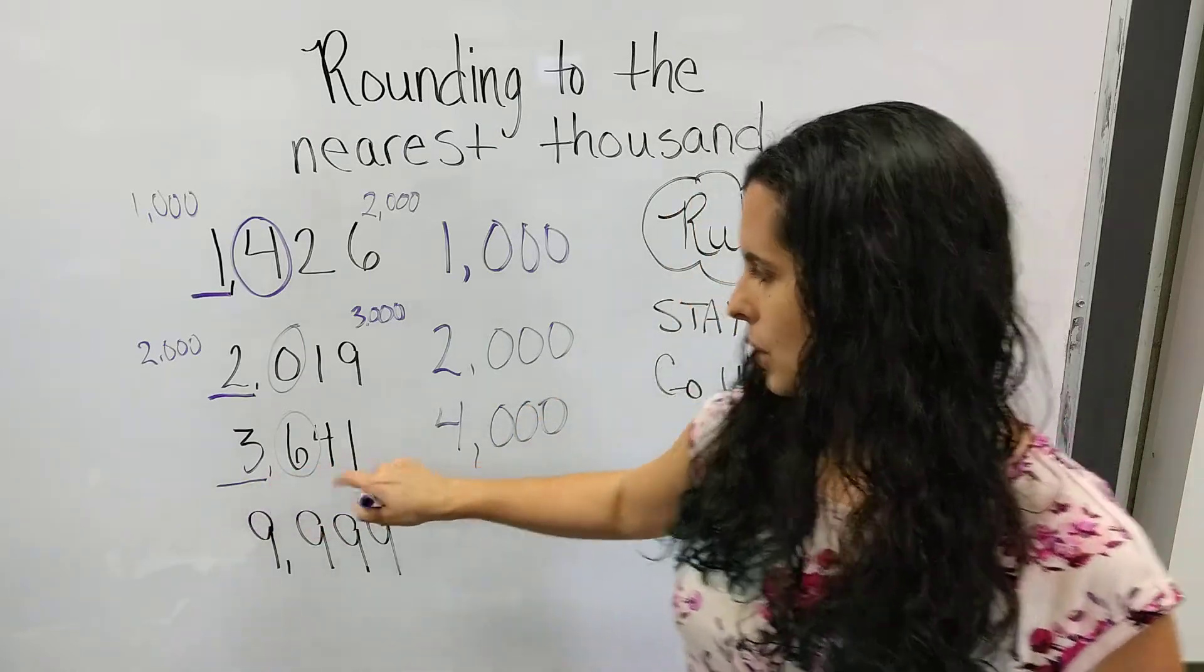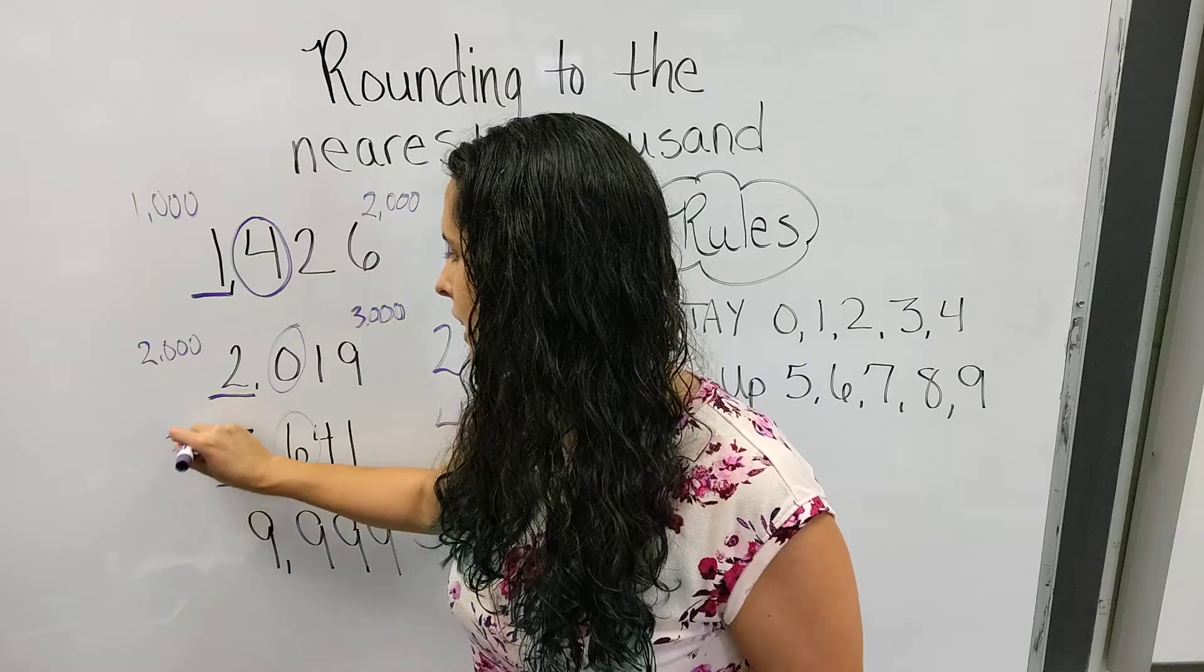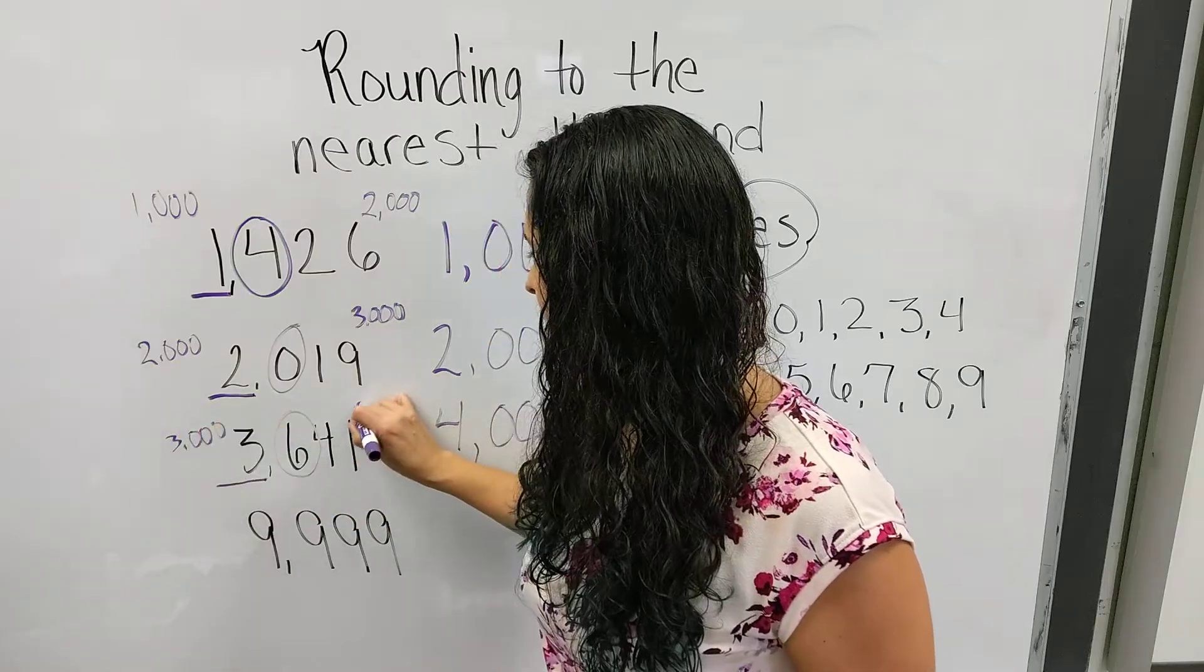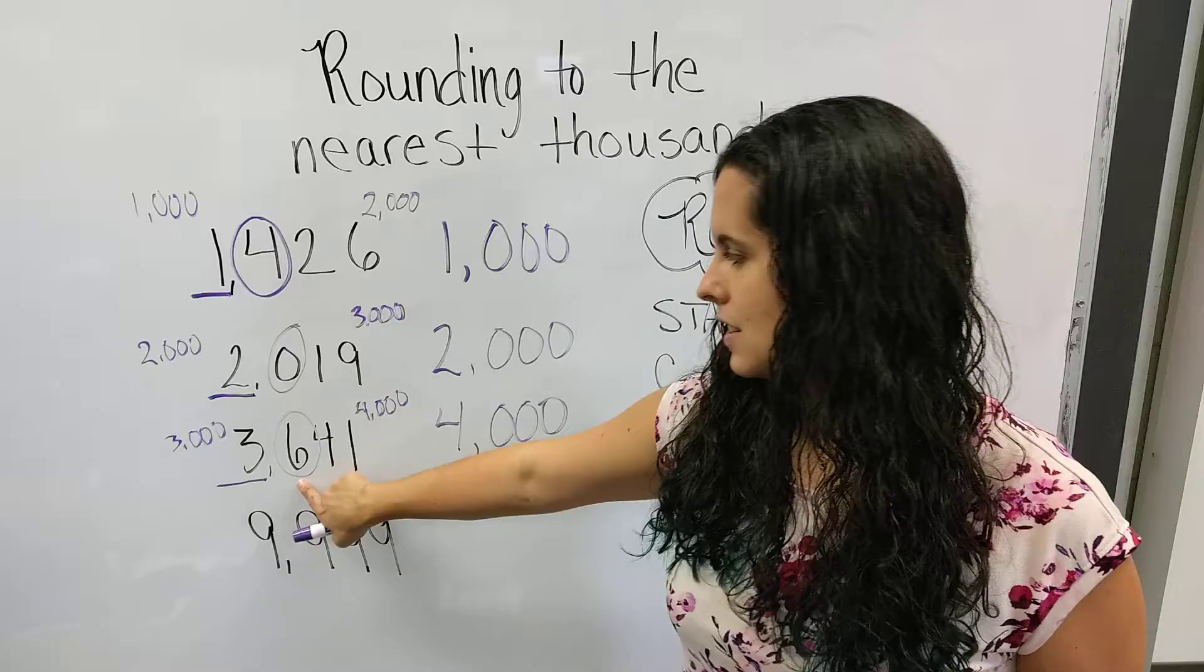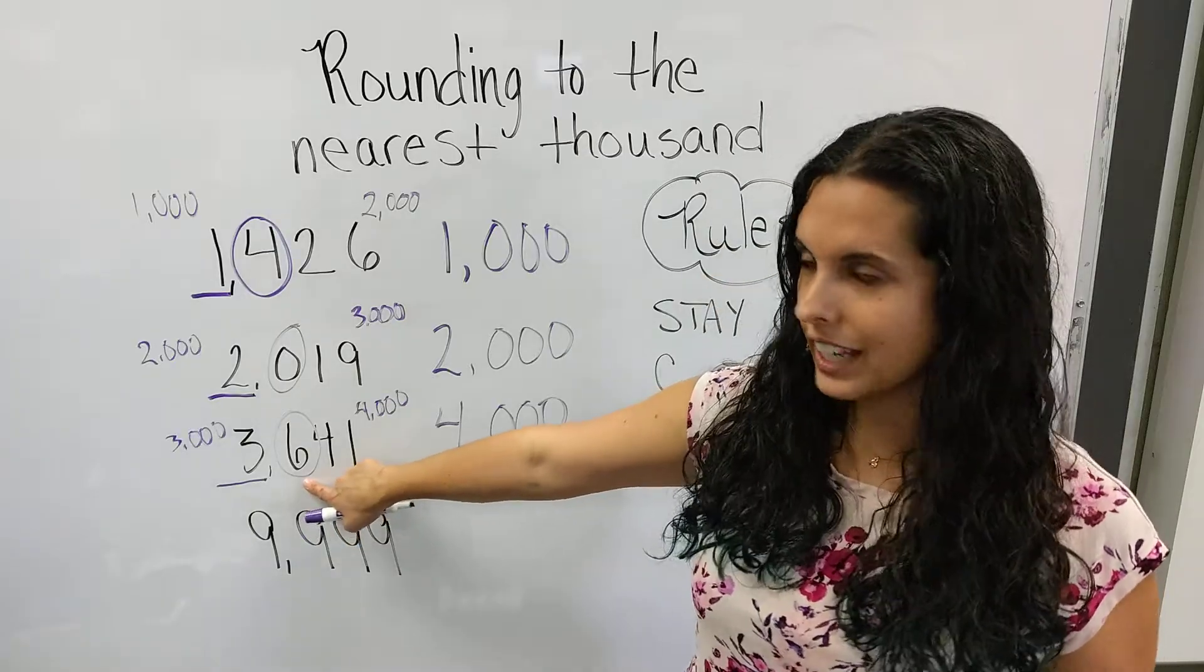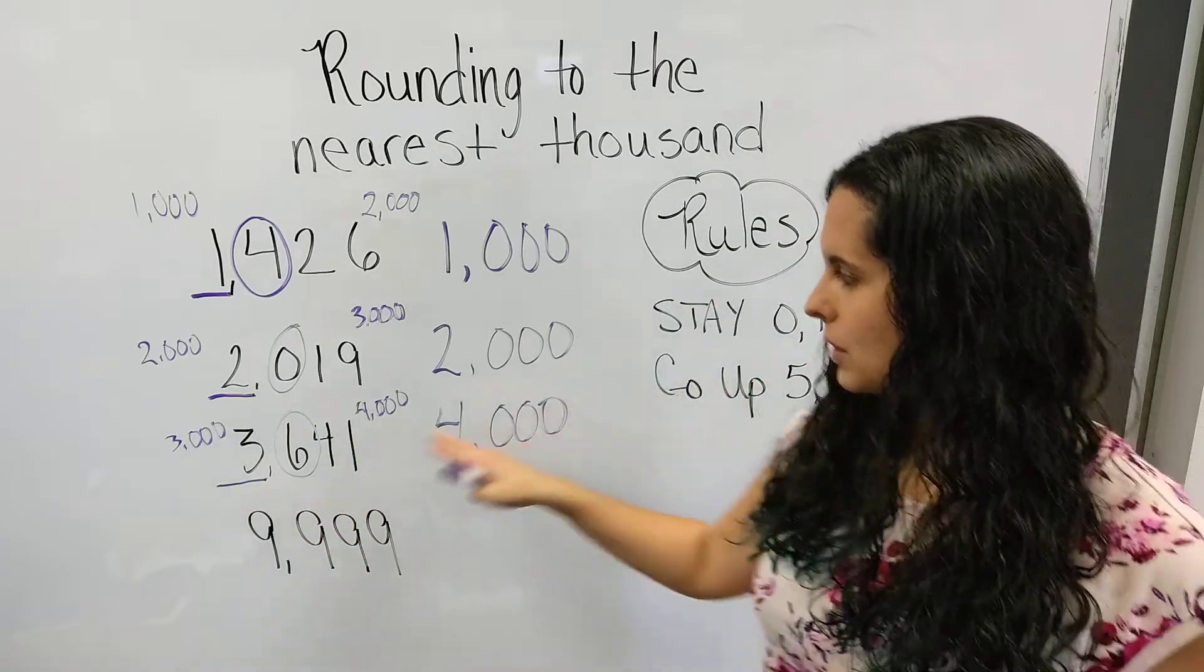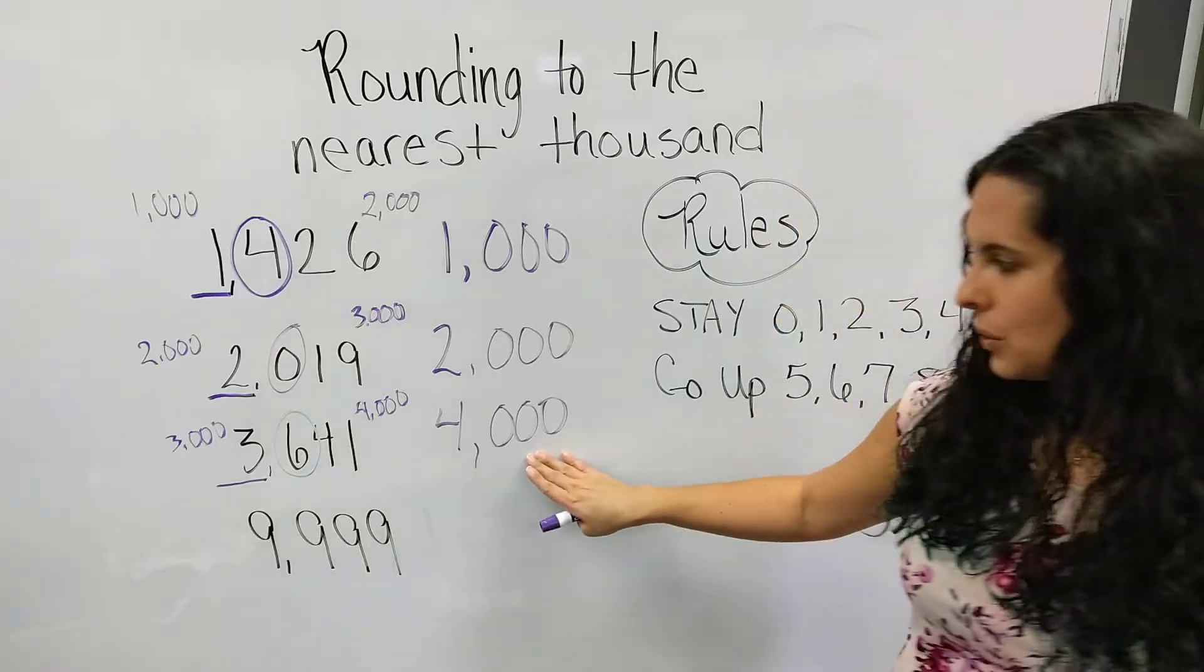3,641 is between 3,000 and 4,000 on a number line. The 6, since it's higher than 5, tells you to go up the number line. So it rounds to 4,000.